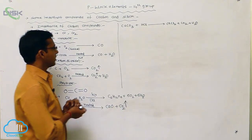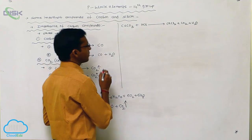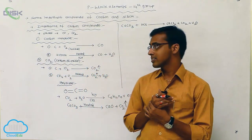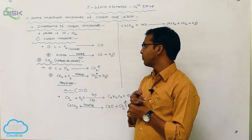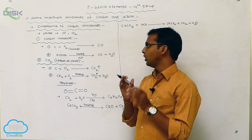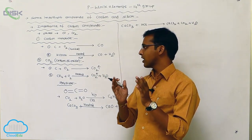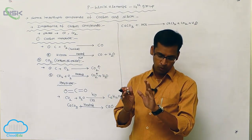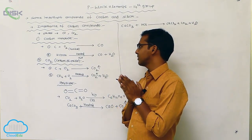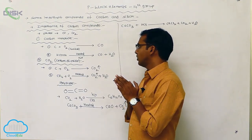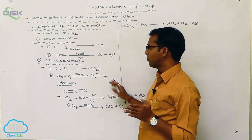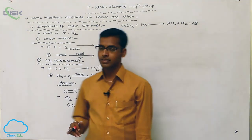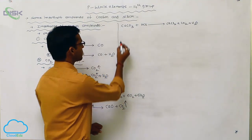So carbon forms only two types of oxides — carbon monoxide and carbon dioxide. These are the important compounds of carbon. Next, we move to the importance of silicon compounds.